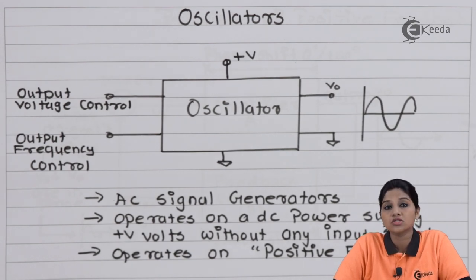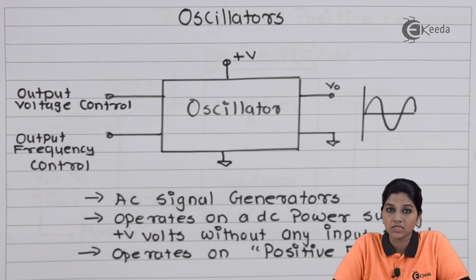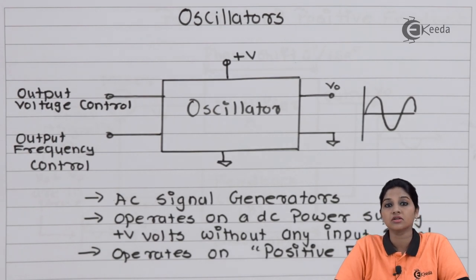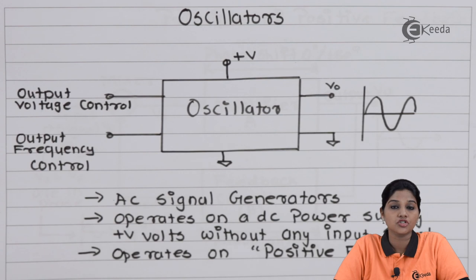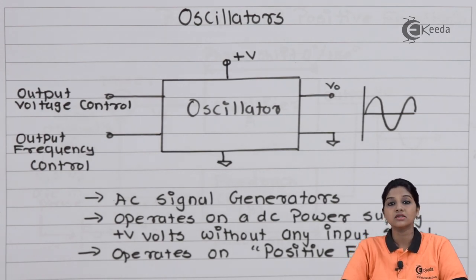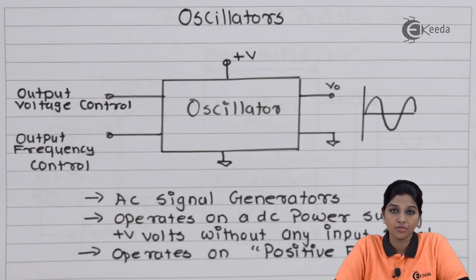Then how does the oscillator produce oscillations? The oscillator operates on a DC power supply. So as long as the DC power supply is available, the oscillator circuit converts the DC power supply into an AC signal at the output. That AC signal has a certain frequency which can be controlled by the circuit.